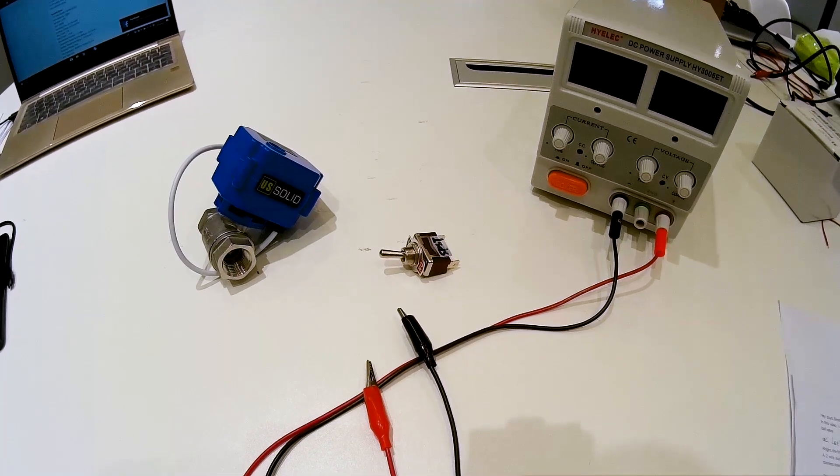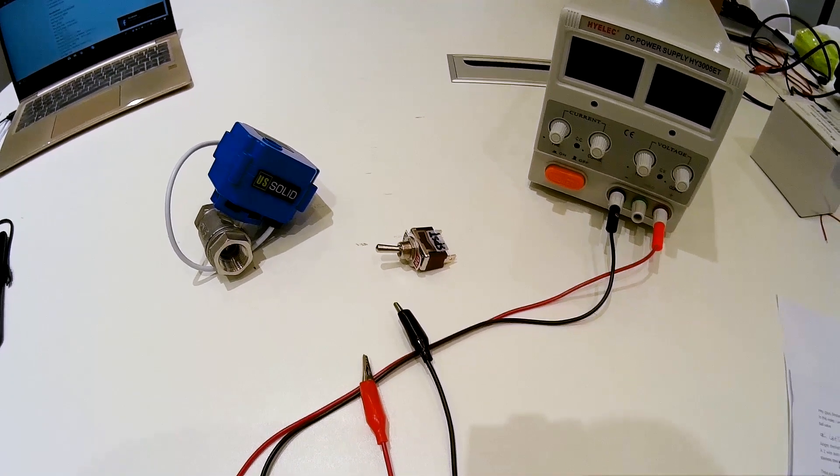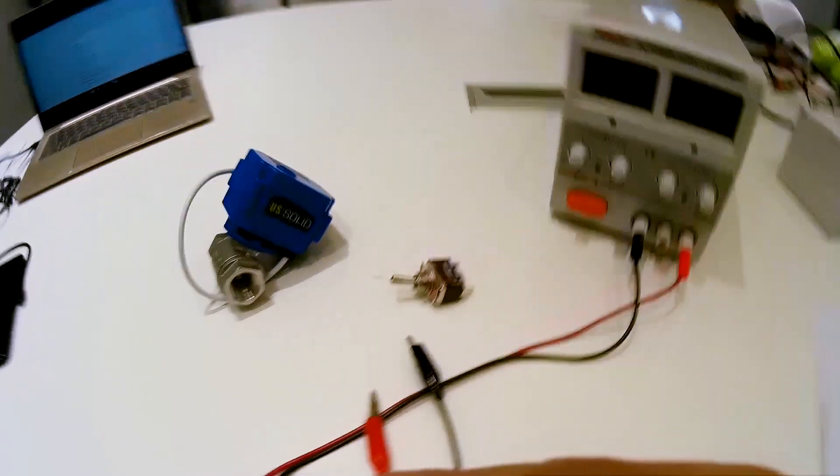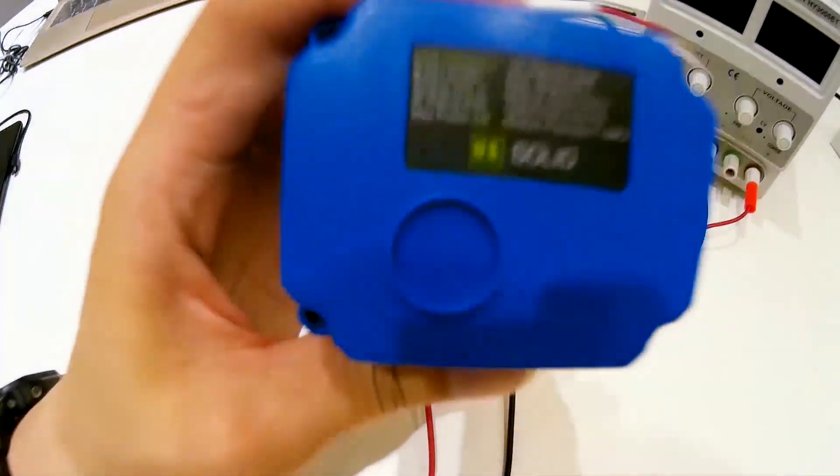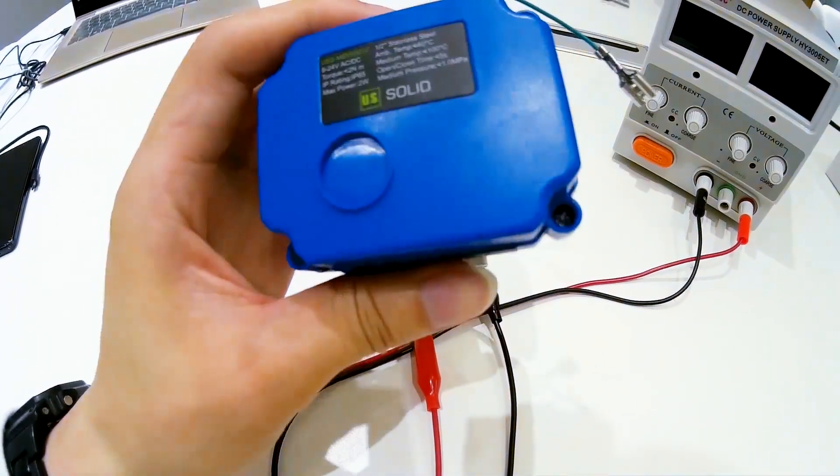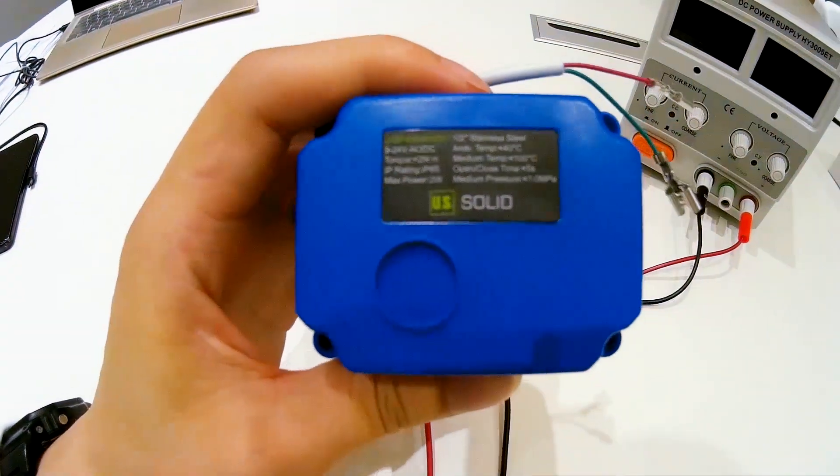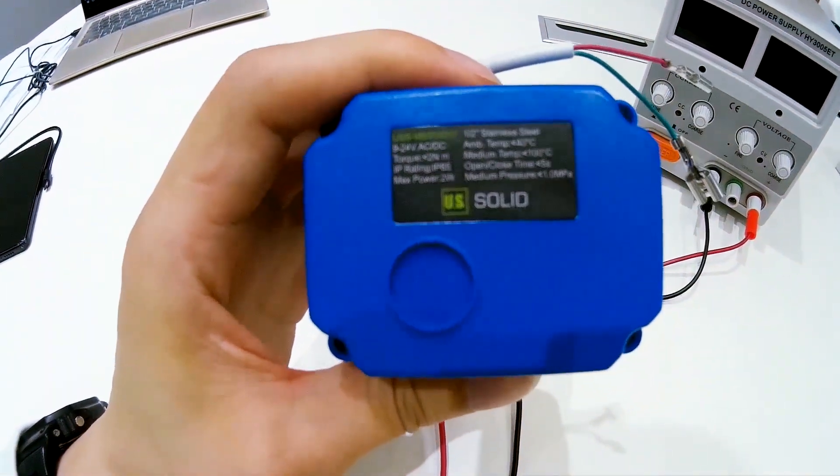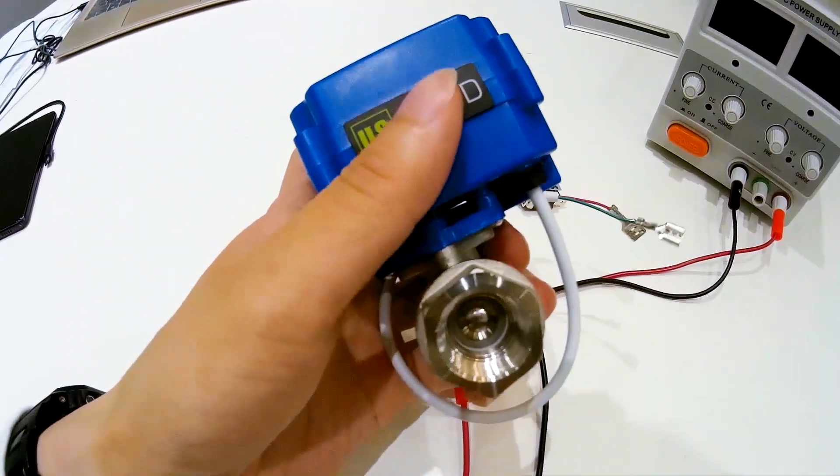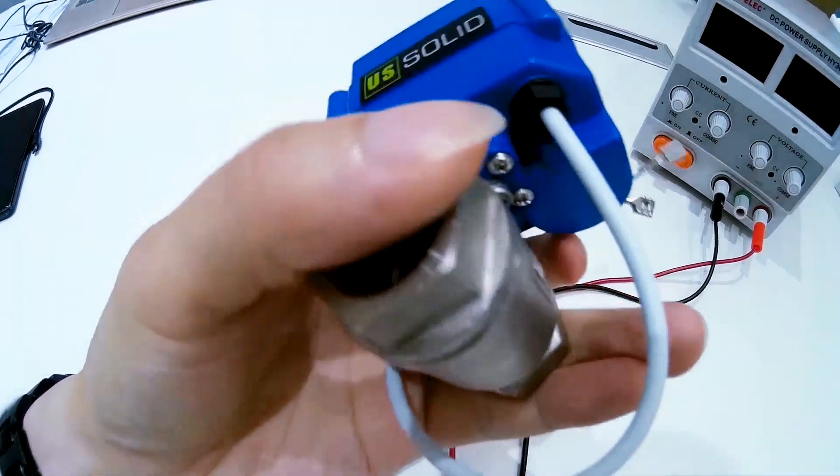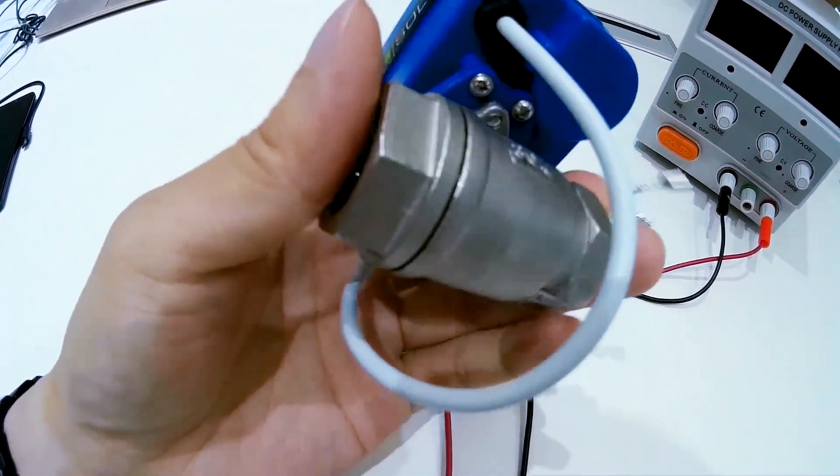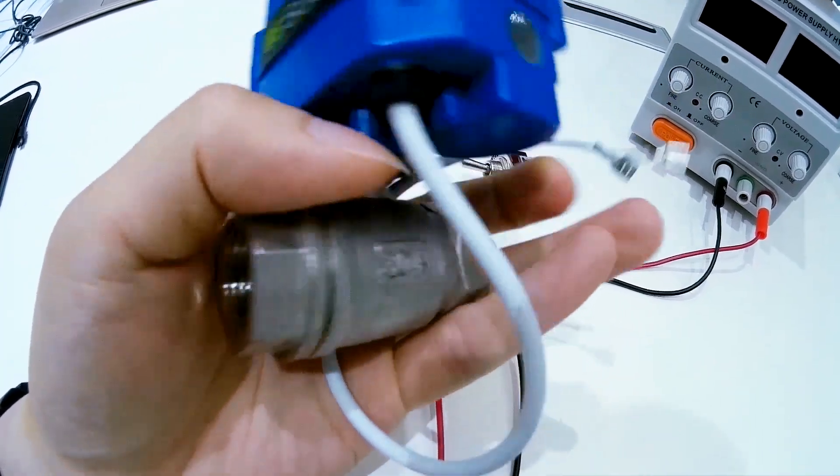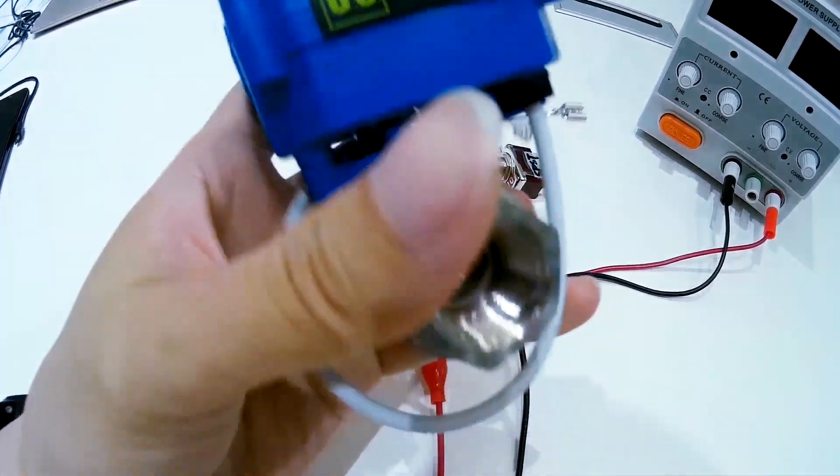Alright, the first step is preparing all the stuff we will need in this video. A 2-wire auto return motorized ball valve. The model here is USS MSB7, half-inch thread, stainless steel body, powered by alternating current or direct current, range in 9 to 24 volts.